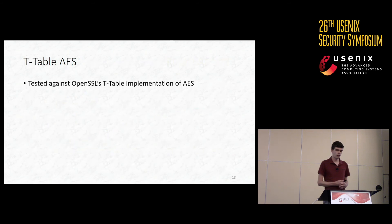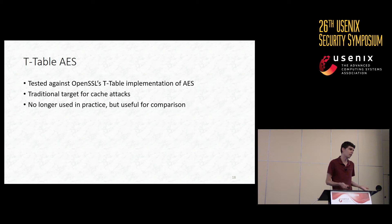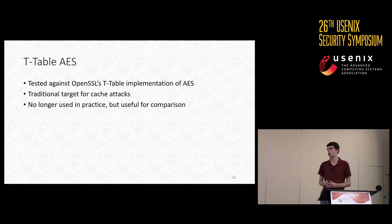Finally, we applied our attack Prime and Abort against OpenSSL's T-table implementation of AES. This is a traditional target for cache attacks, which is no longer used in practice by OpenSSL specifically because it is a traditional target for cache attacks. However, like a lot of the literature, including many recent papers on cache attacks, we use it as a proof of concept — a 'hello world' — to show that our attack works on real targets. This is a chosen plaintext attack which leads to full key recovery for the attacker.